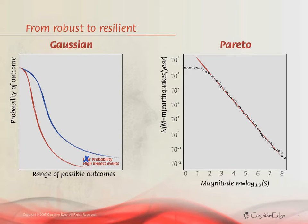It turns out that my so-called low-probability events actually have a medium probability, and that dramatically changes the strategic agenda.